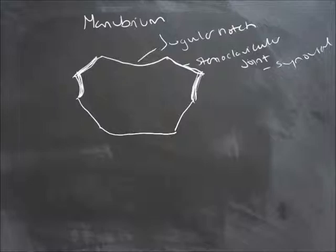Down here is the first sternocostal joint. So rib one attaches to the manubrium part of the sternum. And this is a cartilaginous joint.